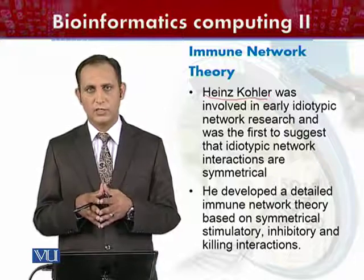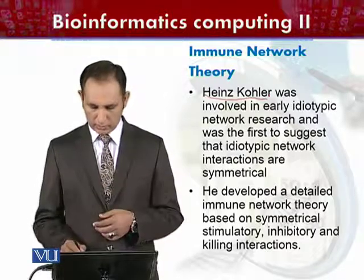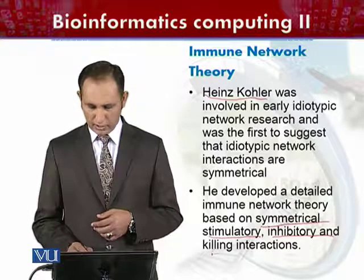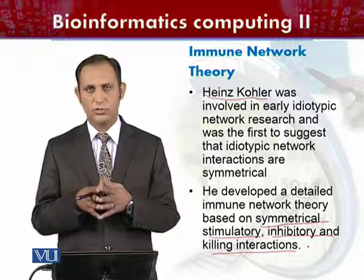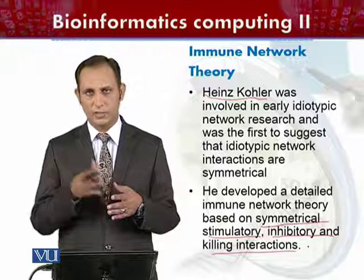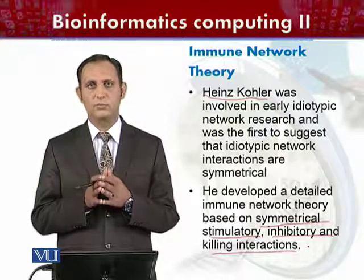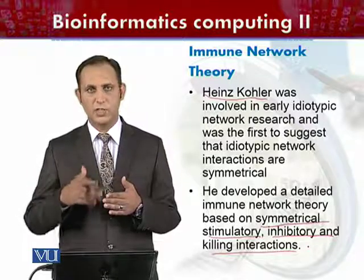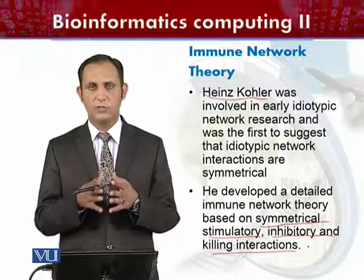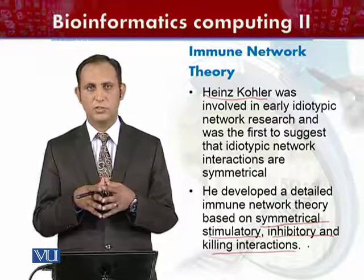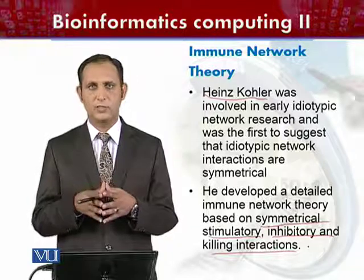Köhler developed a detailed theory based on the postulate that network interactions are symmetrical. That theory became known as the symmetrical network theory. It is based on symmetrical stimulatory, inhibitory, and killing interactions. He modeled all of these using mathematical modeling. This theory explains the functionality of the immune system, and subsequent researchers have worked on symmetry and other angles, but all theories attempt to explain network interactions and the functional mechanism and behavior of the immune system.